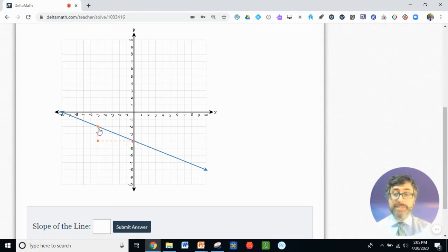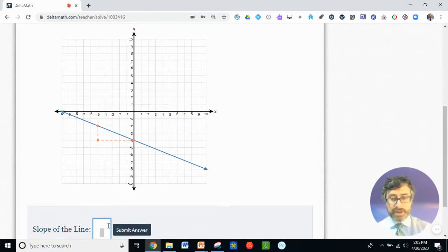Great. I've now sketched the rise and the run so I can make my slope fraction. It's going to be a fraction, so I'm going to type that slash underneath the question mark. And on top, well, first I went down by two. Down is a negative direction, so I can write negative two on top. And then over here, I went right how far? One, two, three, four, five spaces.